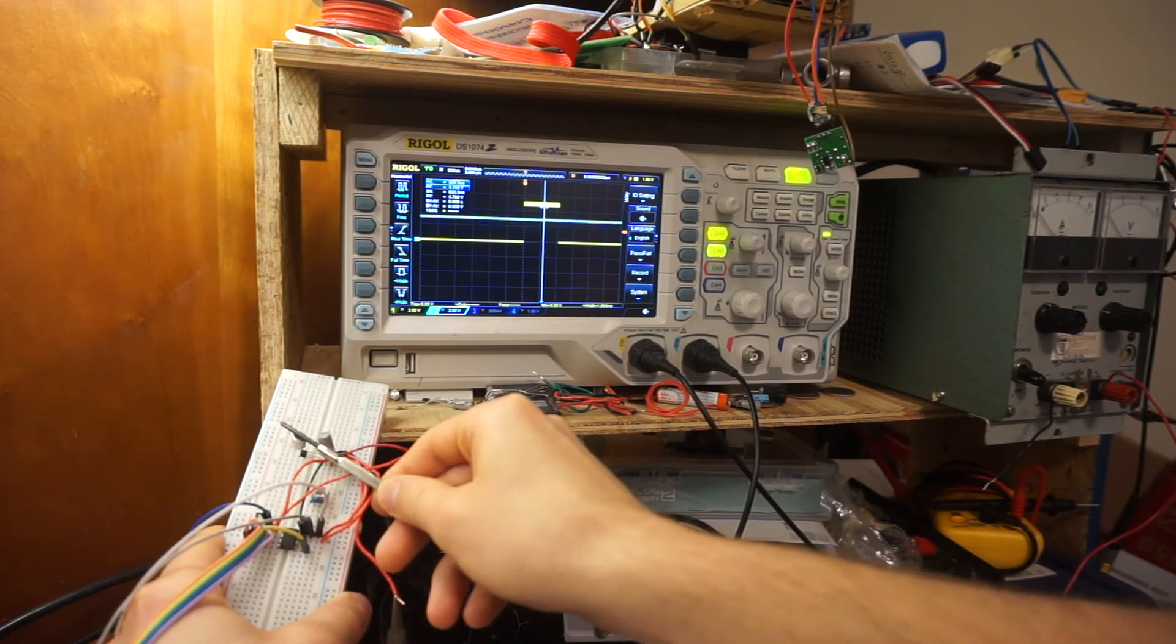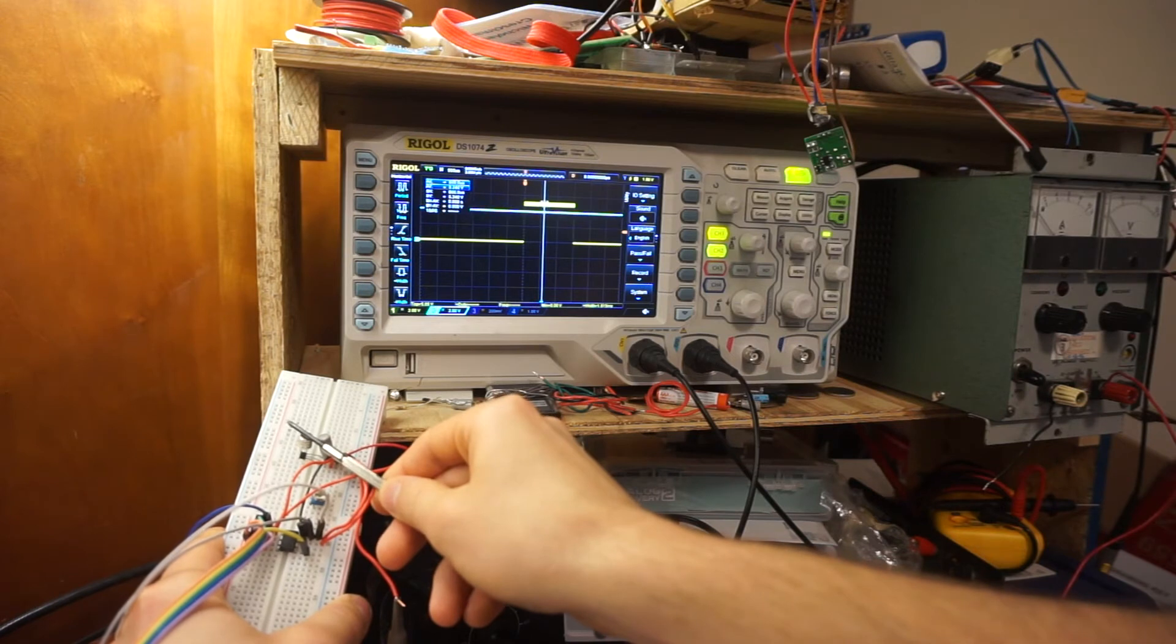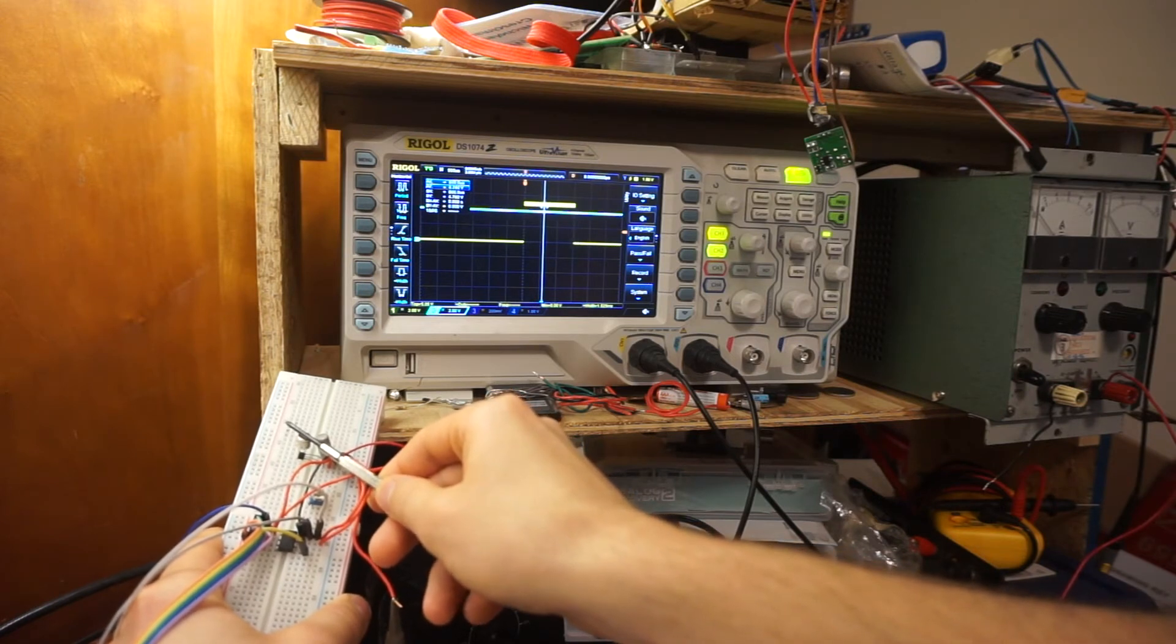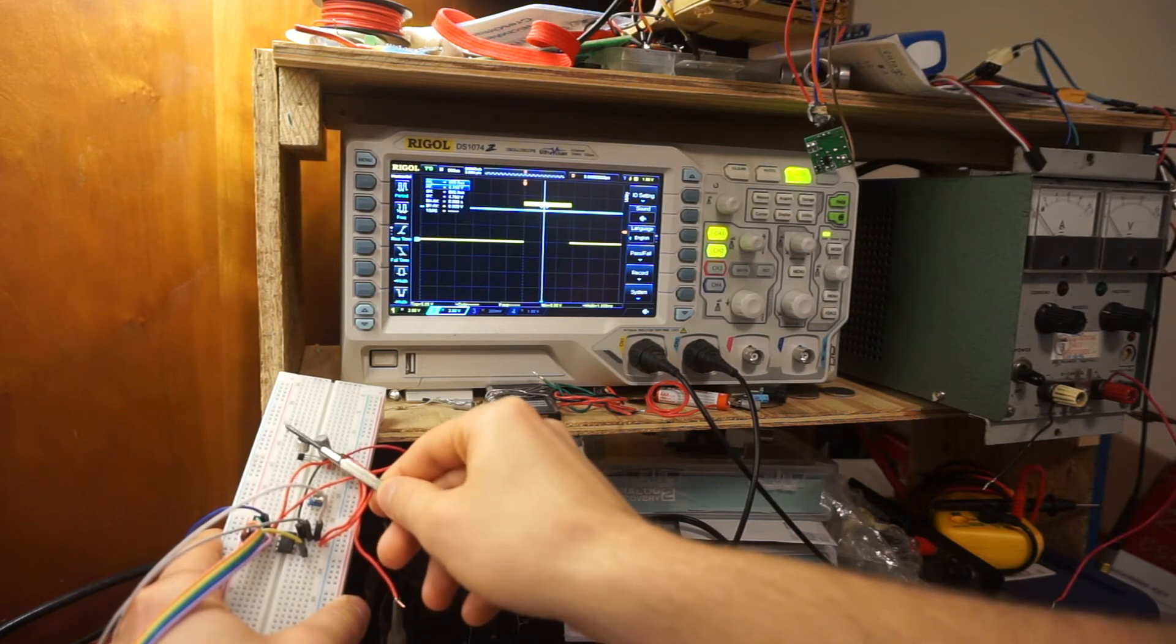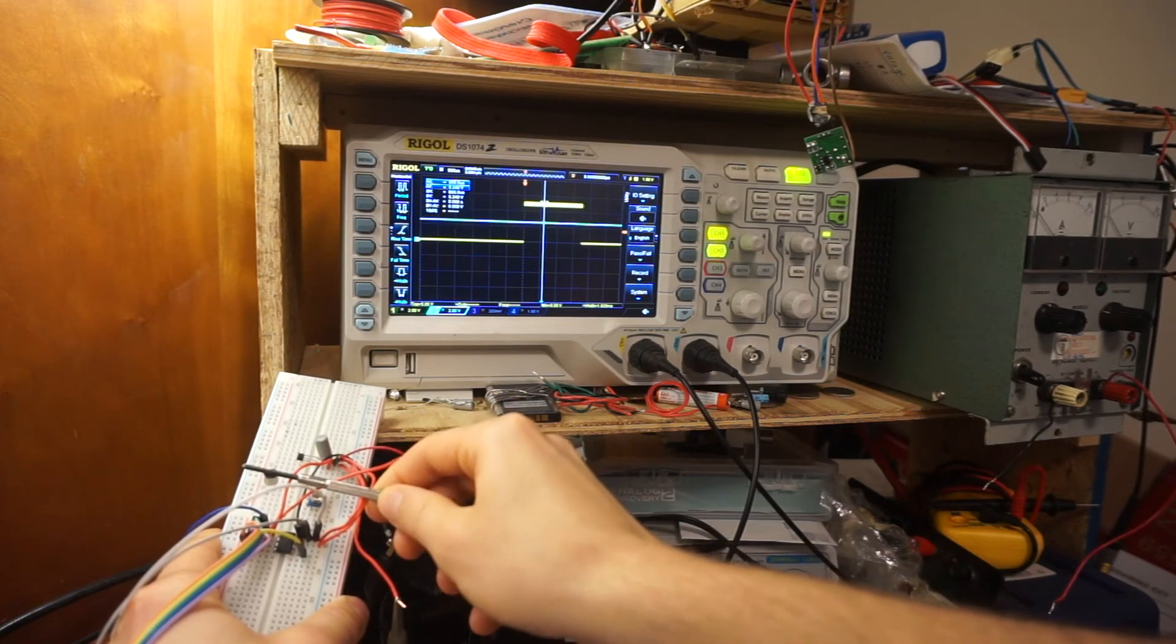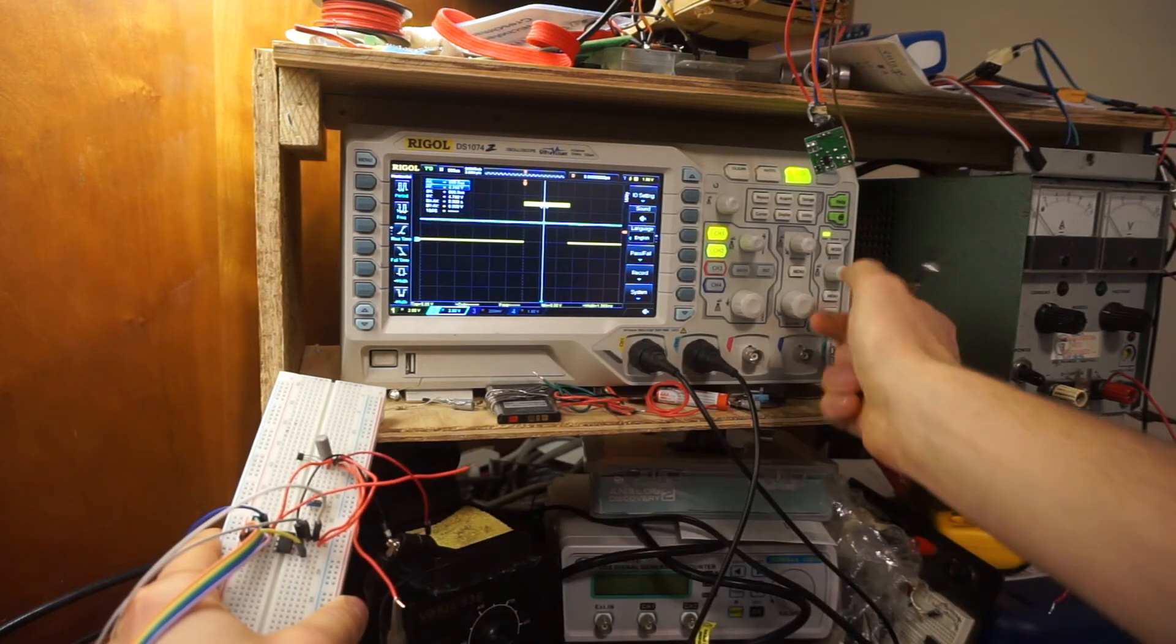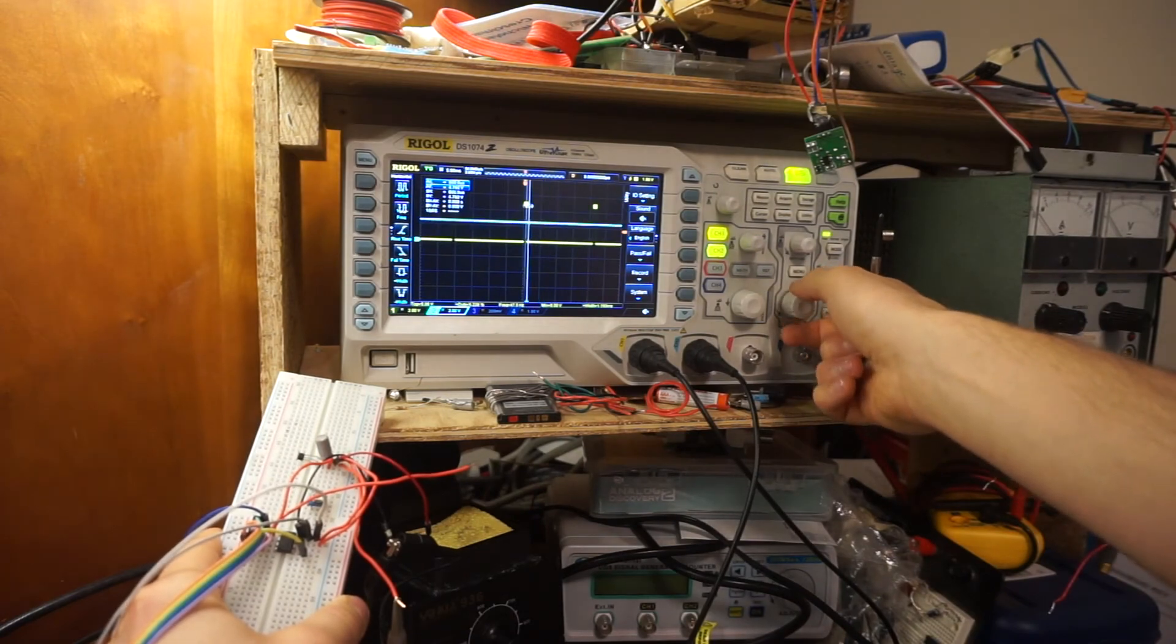So you can see, as I move the magnet towards the Hall effect, the blue line, the Hall effect reading threshold increases. That's read into the ATtiny, and then it adjusts the servo pulse correspondingly. And then you can see also, if I zoom out here.